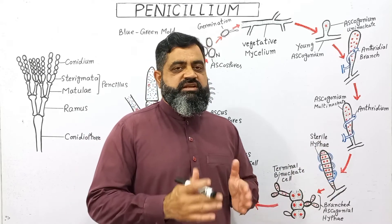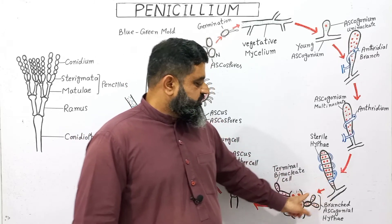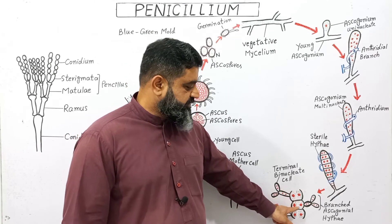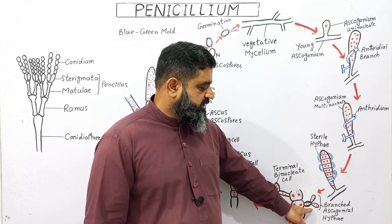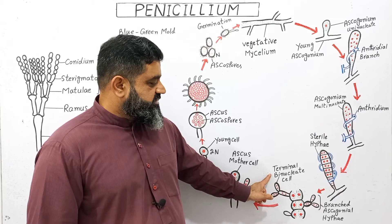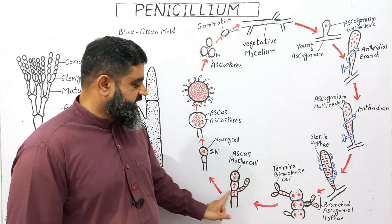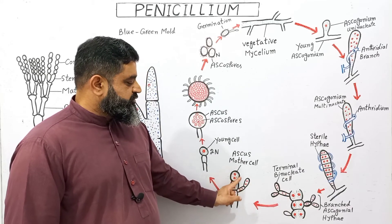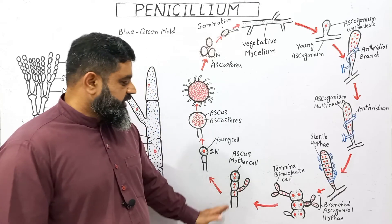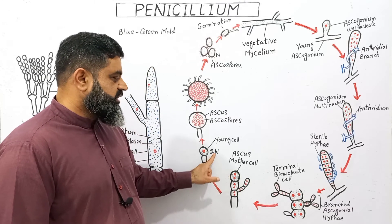Many of these hyphae collectively form a fruiting body of the fungus, which contains binucleate cells. I have taken a small piece of hyphae from this fruiting body to show the internal structure. This hyphae contains binucleate n+n cells, which germinate to produce branches known as branched ascogonium hyphae, also containing n+n nuclei. The terminal portion of the cell is known as the terminal binucleate cell. The terminal cell of the hyphae is called the ascus mother cell, which will produce sexual spores. At this stage, the cell is young.